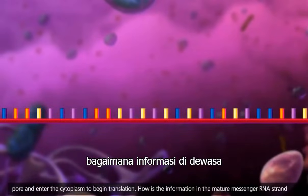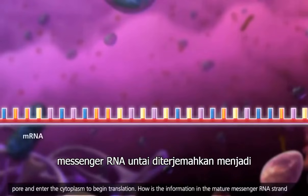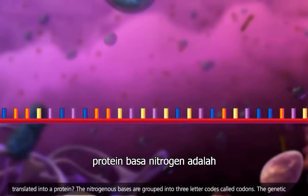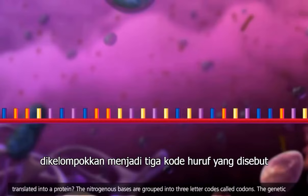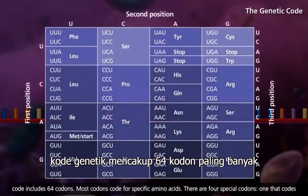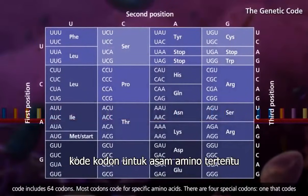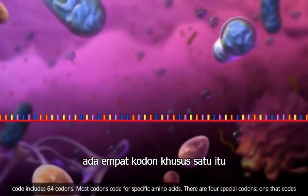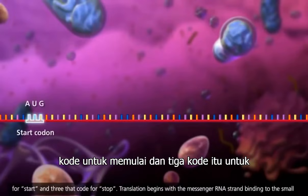How is the information in the mature messenger RNA strand translated into a protein? The nitrogenous bases are grouped into three-letter codes called codons. The genetic code includes 64 codons. Most codons code for specific amino acids. There are four special codons: one that codes for start and three that code for stop.